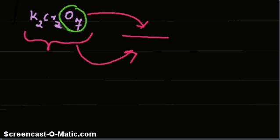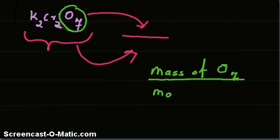In other words, it is mass of O7 divided by molar mass. That is mass of the molecule. Molar mass of potassium dichromate.